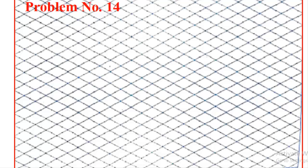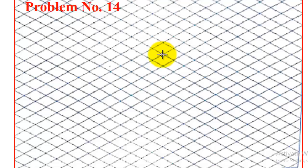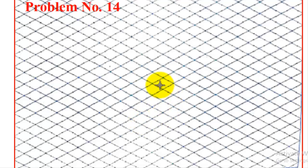Here we have two objects. The first object is a frustum of a cone and the second object is a sphere. We need to construct the frustum of cone at the bottom and then place the sphere on top of it. The frustum has two circular parts — a bottom face and a top face.